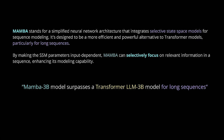By integrating SSM parameters that are now input-dependent into the neural layers, Mamba (S6) can selectively focus on relevant input information in a sequence, enhancing its modeling capability. This mechanism is really key to understanding Mamba. The mechanism is akin to a filtering process where Mamba decides which information to focus on and which to downplay or ignore — achieved through a model gating mechanism, a set of dynamic controls that change in response to the data being processed.